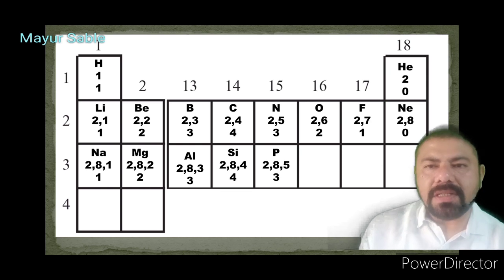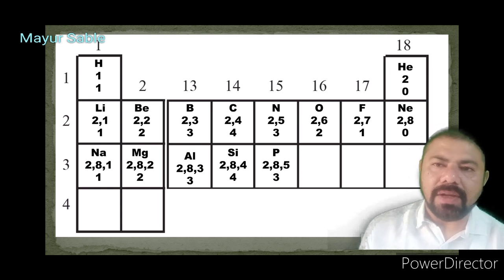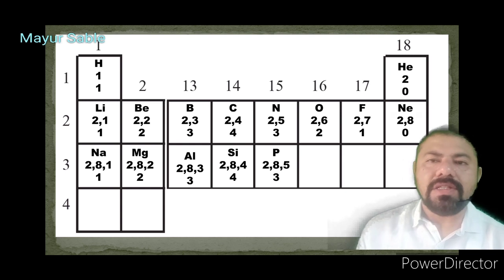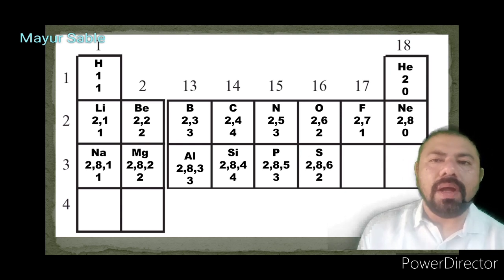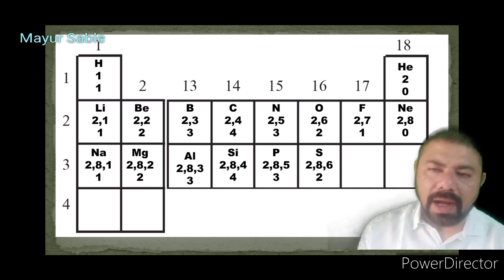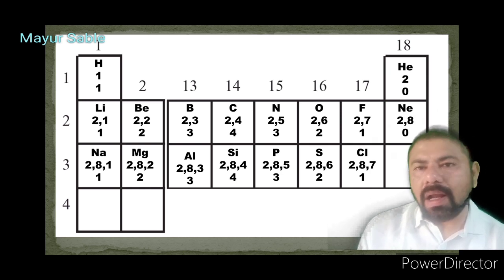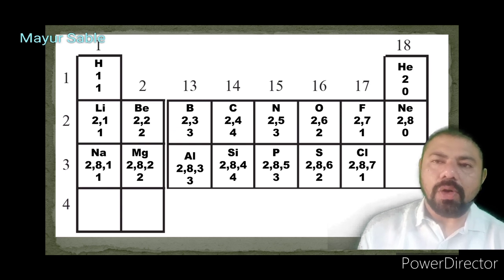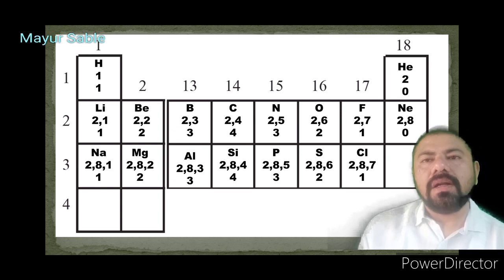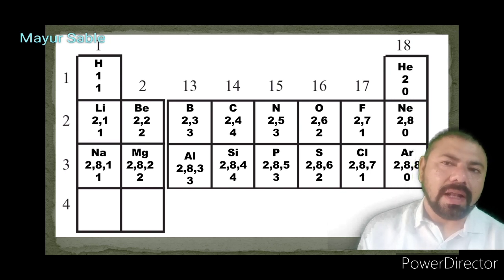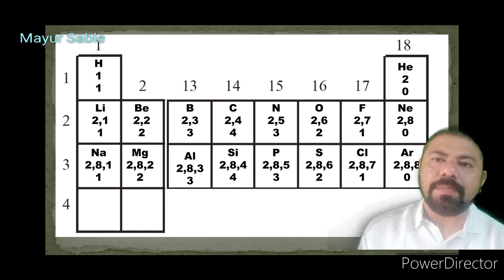Phosphorus has electronic configuration 2,8,5 — 5 electrons in outermost shell, can gain 3 electrons, valency is 3. Sulfur has configuration 2,8,6 — outermost shell contains 6 electrons, gains 2 electrons, valency is 2. Chlorine (halogen) has configuration 2,8,7 — 7 electrons in outermost shell, valency is 1. Argon is an inert gas with stable electronic configuration 2,8,8.